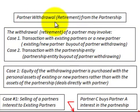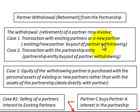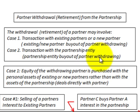Here we're going to be looking at a partner withdrawal or the retirement of a partner from a partnership. The withdrawal or retirement may involve two different cases. Case one is a transaction with the existing partners or a new partner, where the existing or new partner directly buys out the withdrawing or retiring partner. Case two is a transaction with the partnership entity, where the partnership entity buys out the retiring partner.